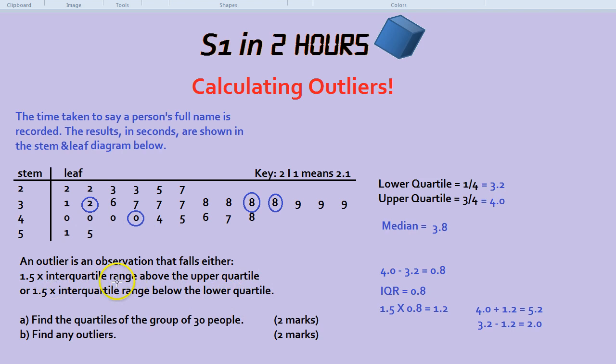What is the interquartile range though? That's simply the upper quartile take away the lower quartile. That's how you find the IQR, the interquartile range. 4.0 take away 3.2 is 0.8. So that's the IQR, the interquartile range.